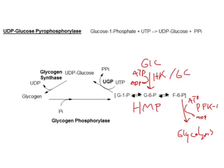All of these enzymes that use any kind of nucleotide phosphate also need a magnesium. That magnesium helps deal with some of the charge on the tails of ATP, or UTP, or GTP, or whatever it has. You need a magnesium around.